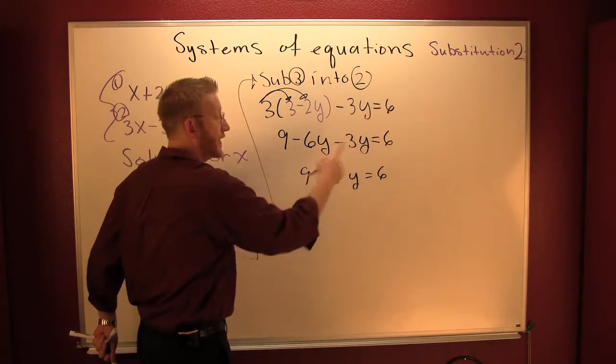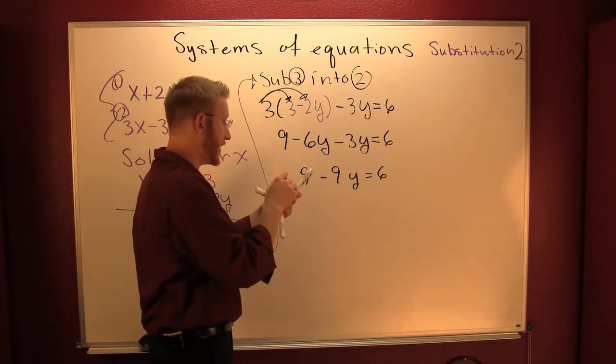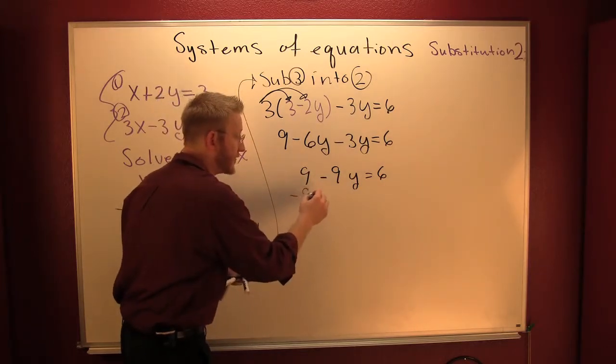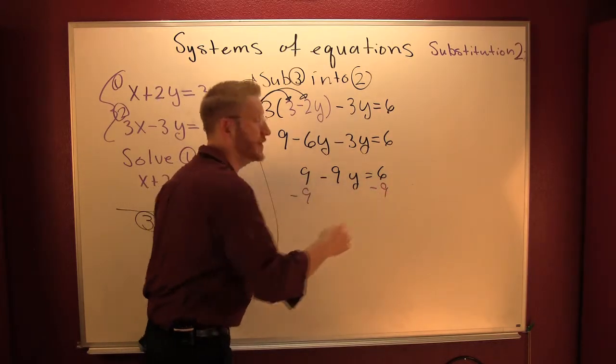Numbers on one side, letters on the other. Here I got numbers on both sides. I want them on one side. Which side? Don't care. Right side? Why not? So then I subtract off that nine. Subtract off that nine.